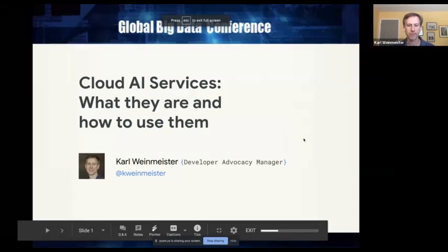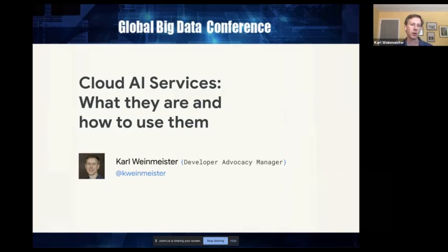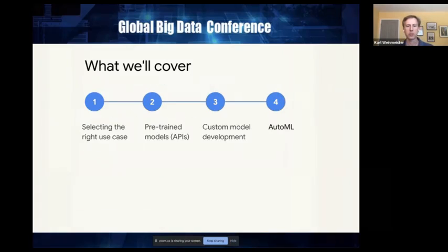Let's get started. Today I'm going to talk about AI in the cloud. I'm with Google, so that's what I know best, but we'll cover all the different ways you can leverage cloud services — from APIs all the way to custom model development, and everywhere in between with AutoML. Whether you're an experienced data scientist or a developer looking to bring machine learning into your applications, I hope there's something helpful here. We'll also do a couple of hands-on demos so you can see some of these tools in action. We'll start with the right use case for machine learning, then cover APIs, custom model building, and finally AutoML.